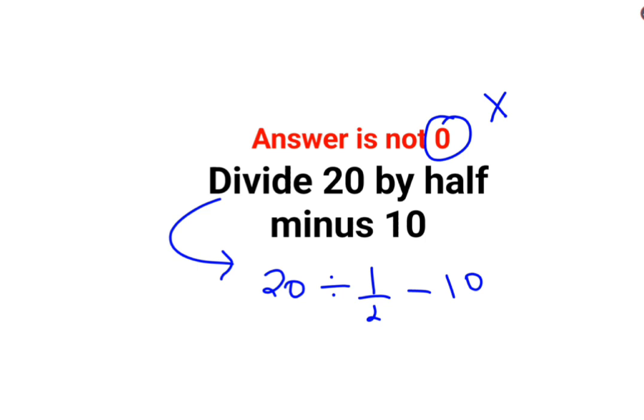Please understand, for 20 divided by half, whenever you have division you need to follow the rule of KCF, where K stands for keeping the first number as it is.